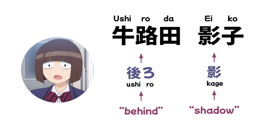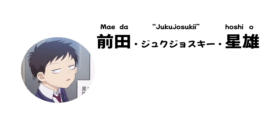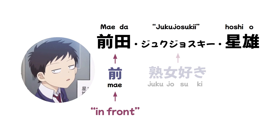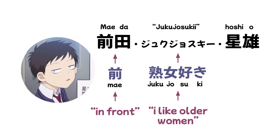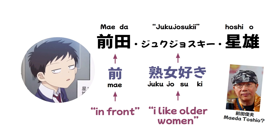Maeda Jukujo Suki Hoshio: 'Maeda' means 'in front,' and he sits in front of Komi-san in class. His nickname 'Jukujo Suki' literally means 'I like older women,' a very literal description of his main personality quirk. Hoshio's name also sounds very close to the real-world erotic manga artist Maeda Toshio, who was prolific in the '80s — so maybe Hoshio became interested in older women after reading '80s-era manga. And that's every named character in class 1-1.